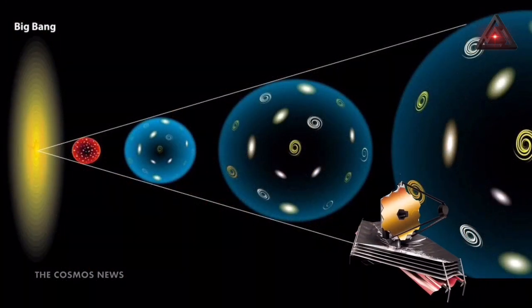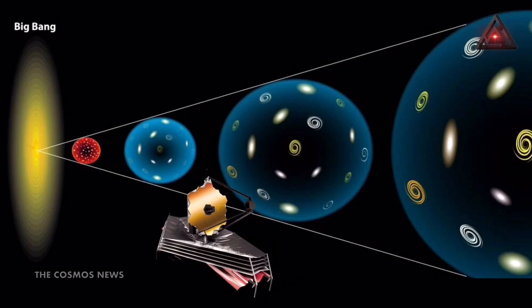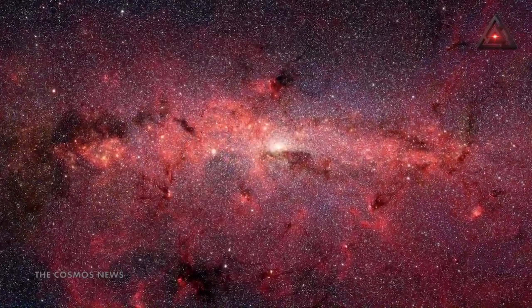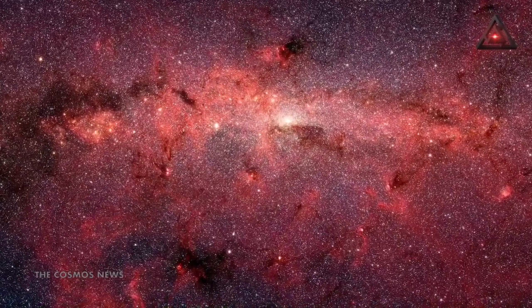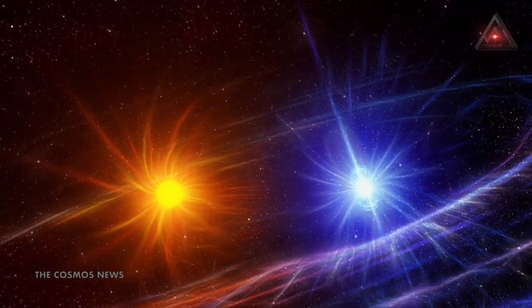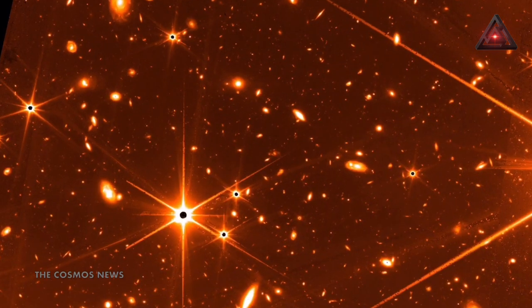Webb's infrared capabilities allow it to see back in time to the Big Bang, which happened 13.8 billion years ago. Because the universe is expanding, light from the earliest stars shifts from the ultraviolet and visible wavelengths it was emitted in to longer infrared wavelengths, which Webb is equipped to detect at an unprecedented resolution.